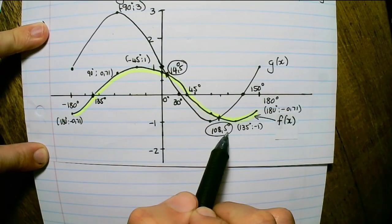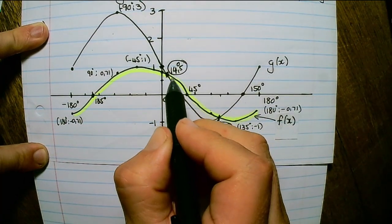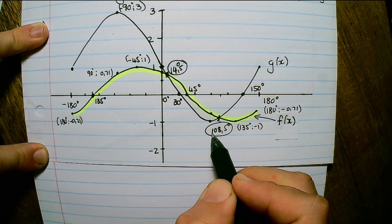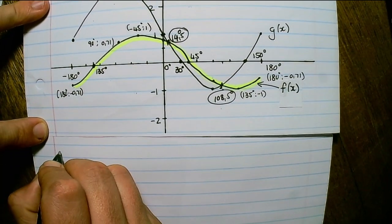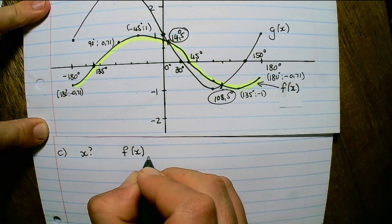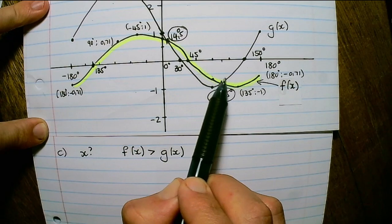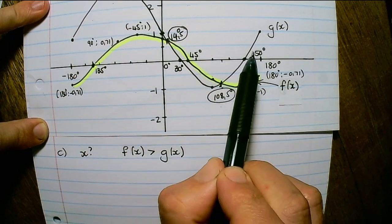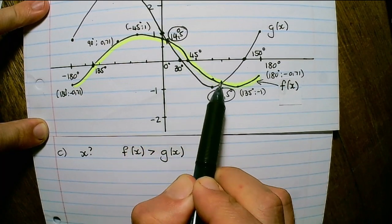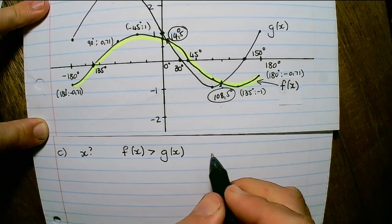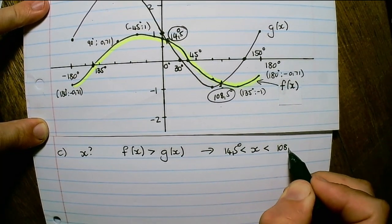There are two possible points of intersection between f and g. Finding these values falls outside of our curriculum, but a rough estimate would be x equals 14.5 degrees and x equals 108.5 degrees. A possible question is: for which values of x is f(x) bigger than g(x)? Since f(x) is the yellow graph, f(x) is bigger than g(x) when it is above g(x). We can see that f(x) is above g(x) between the two intersection points, so for x values between 14.5 degrees and 108.5 degrees.